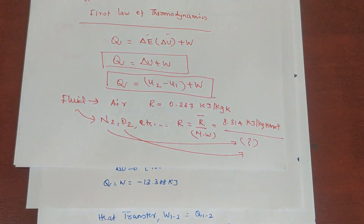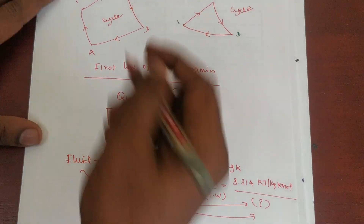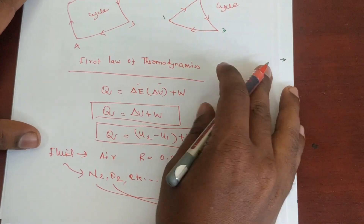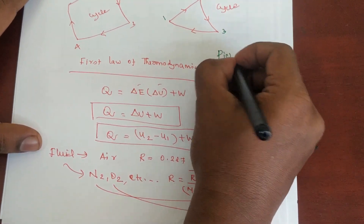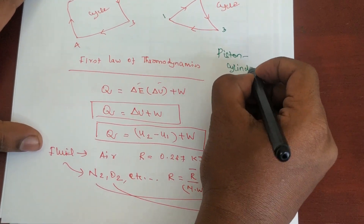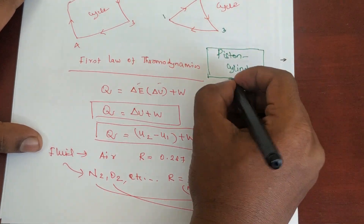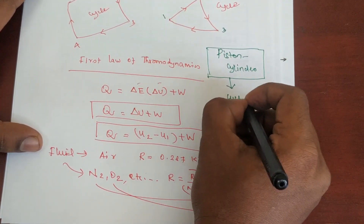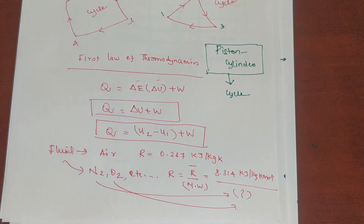Problems are solved. How to solve closed system problems? For expansion, it is only the combination of piston and cylinder. A piston-cylinder combination — how to solve the problem — followed by a cycle. In this problem identification, you can easily identify this type of problem.